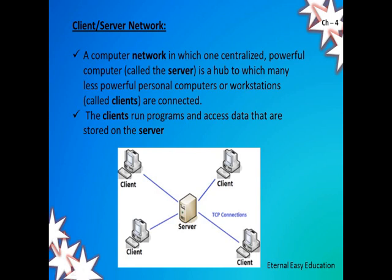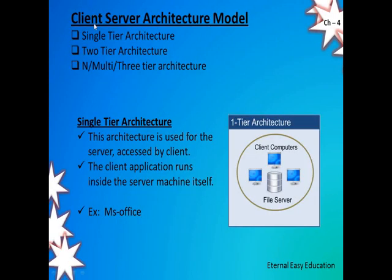That is the difference between a Normal Network and a Client Server Network. Next, we need to know what is the Client Server Architecture Model. This can have single, two, or multi-tier architecture. The client computer and the file system where the content is accessed happen at one place or one machine itself — that is said to be single-tier architecture.